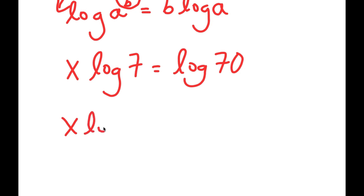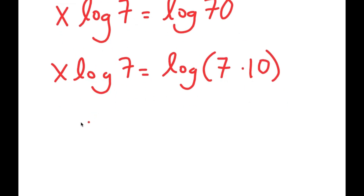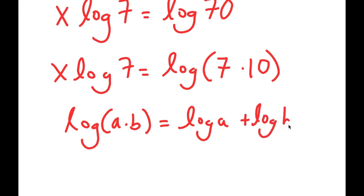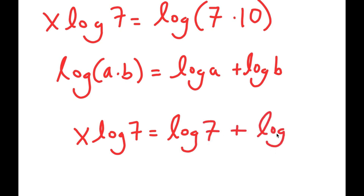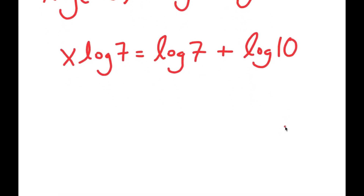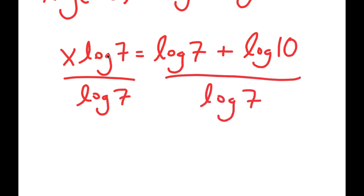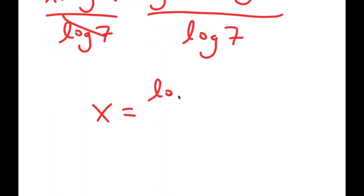Now log 70 is the same thing as log of 7 times 10. Another property of logarithms is that log of a times b equals log a plus log b. So log of 7 times 10 equals log 7 plus log 10. From here, I divide both sides by log 7 to isolate x, and I get x equals log 7 plus log 10, all over log 7.